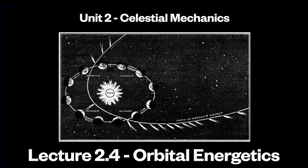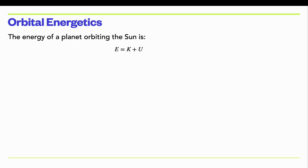Lecture 2.4, Orbital Energetics. In this section we'll calculate the energy of a planet in elliptical orbit. The total energy is the kinetic plus potential energy, which is just ½mv² minus GMm/r, and the second term is the gravitational potential energy associated with Newton's law of universal gravity.